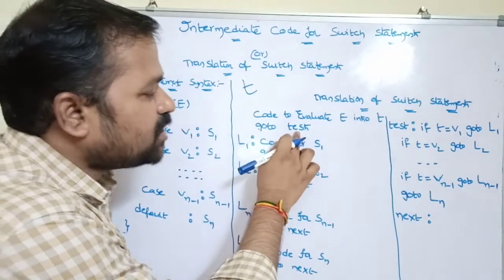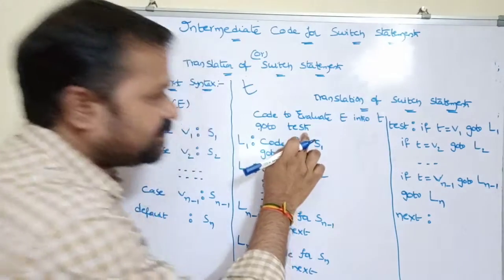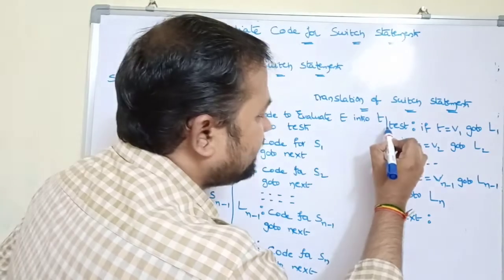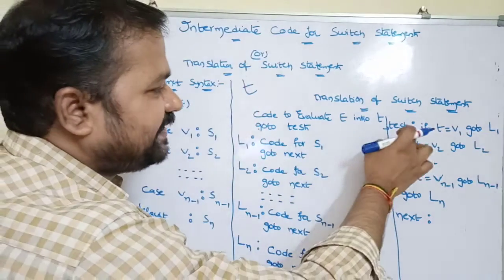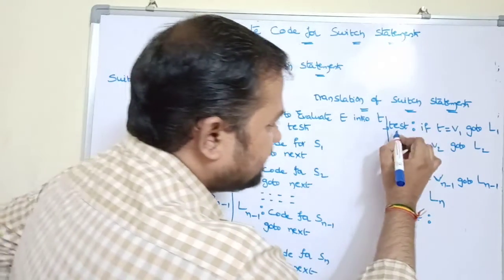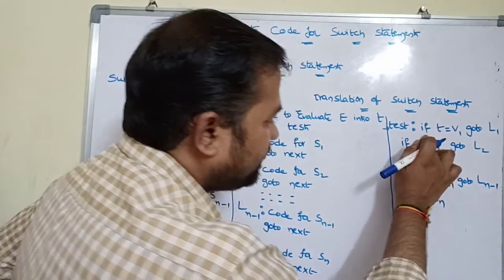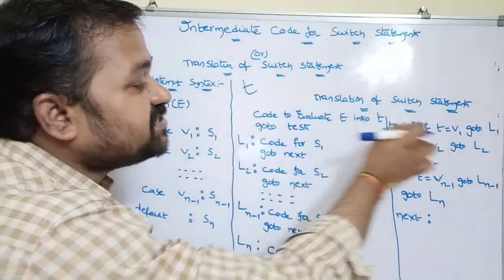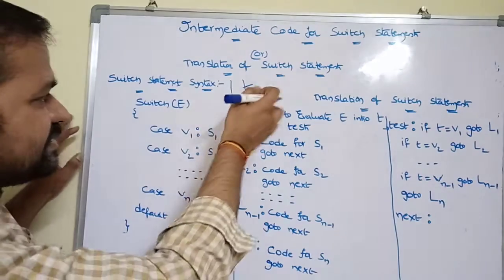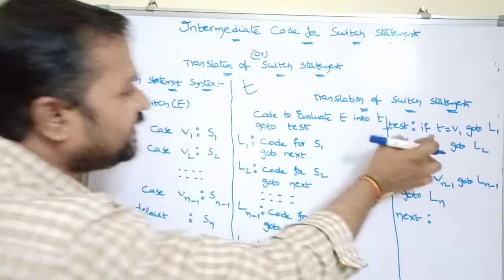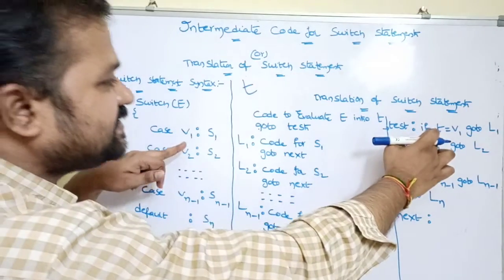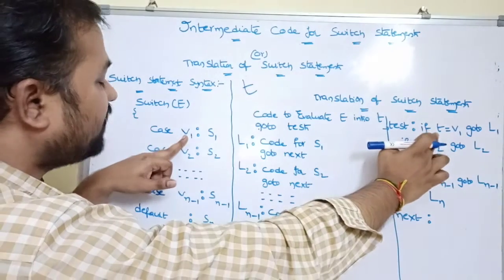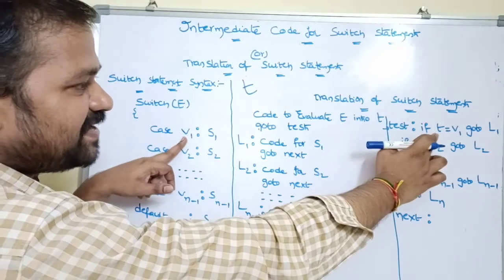Control is transferred to the 'test' label. In the test block, 'test:' is the label. Here we check: if t equals v1 — where t is the expression result and v1 is the case value — then we need to go to L1.